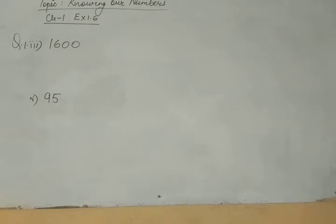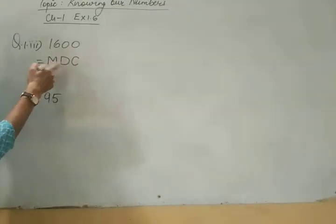In the first question, third part, we have to write 1600 in roman numeral. 1600 means for 1000, we will write M. For 6, we will write D means 500 plus 100. DC means 600. Clear? This is 1600.